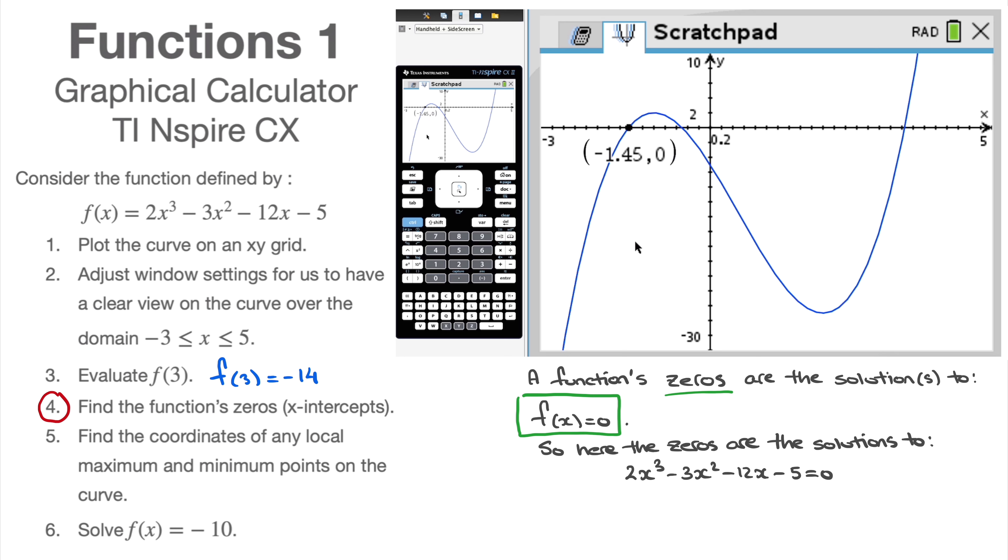That first zero has coordinates. Well, let's see. I'll write -1.45, 0. Now, technically, if you had to solve the equation f(x) = 0, one of the solutions would therefore be x = -1.45.